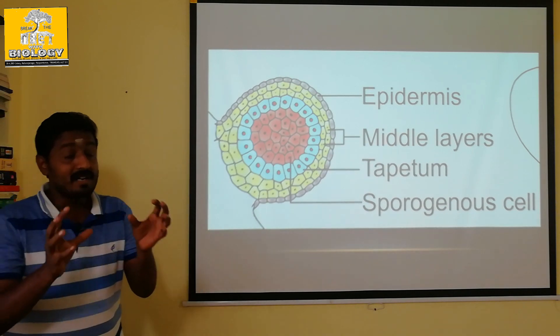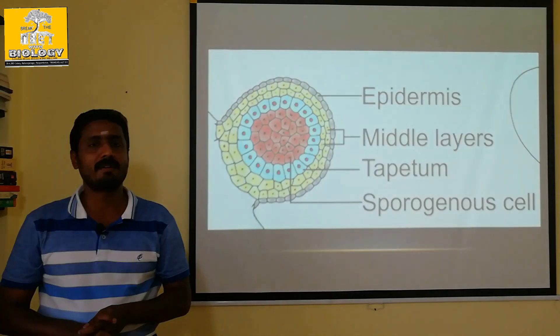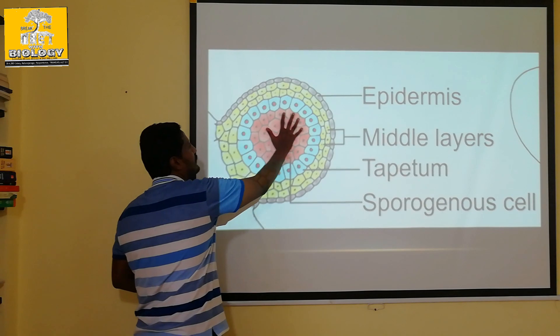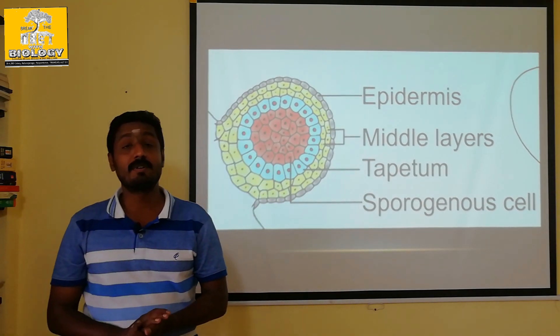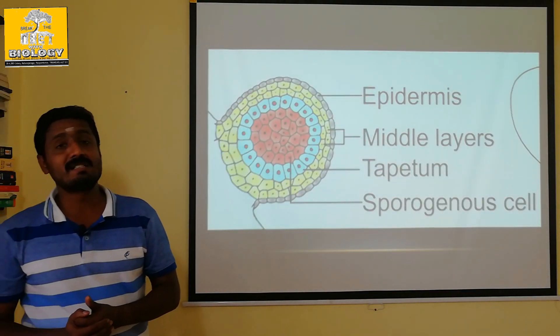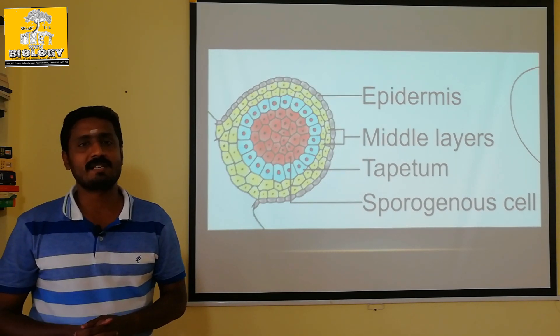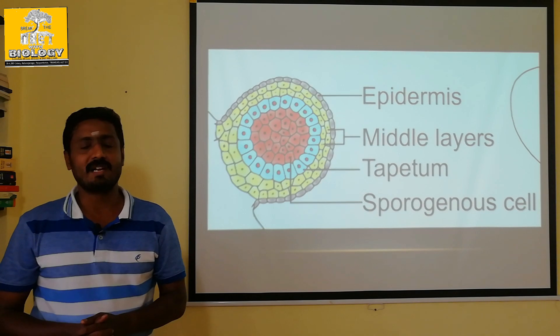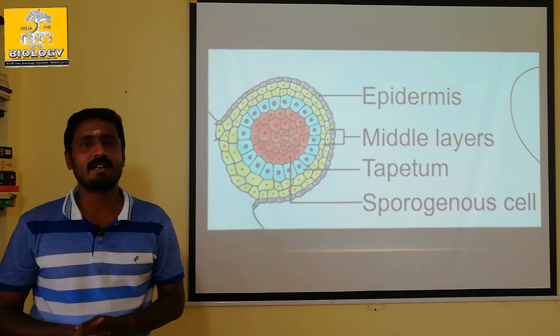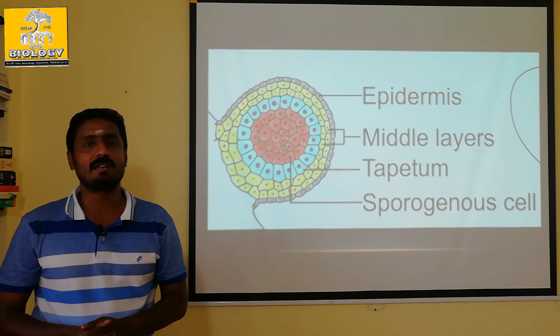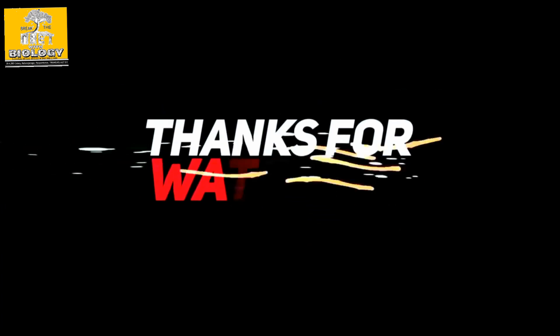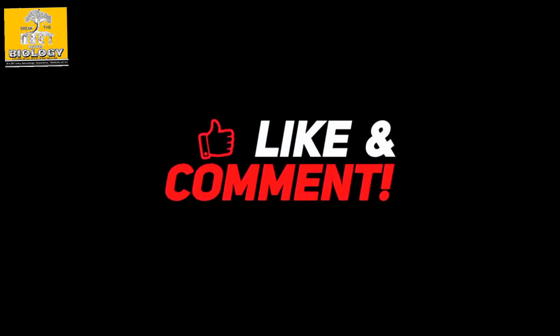So, wall layers are formed from primary parietal cells. Next, we will see how sporogenous cells develop. That will be covered in Part 2. Thank you so much for watching.